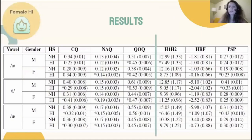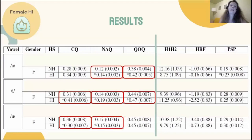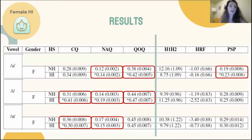Regarding female speakers, time-based parameters showed more differences than frequency-based parameters, with differential trends from male hearing impaired speakers. In vowels A and E, all time-based parameters were found higher than normal, which may indicate more gradual vocal fold closure and breathy voice for female speakers with hearing impairment. However, opposite trends were observed for vowel U. Regarding frequency-based parameters, no significant differences were found in H1-H2 or HRF for any vowel. PSP values were higher for vowels A and U, reaching statistical significance only for vowel A, again denoting more breathy phonation.